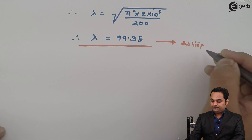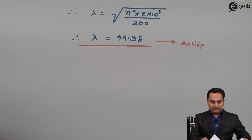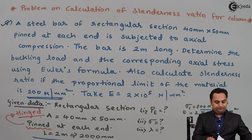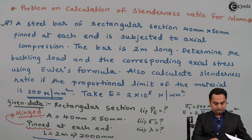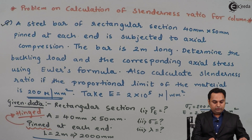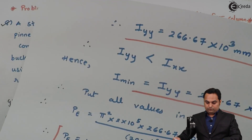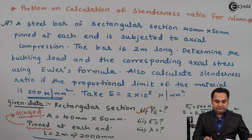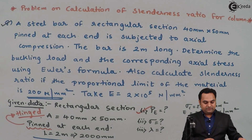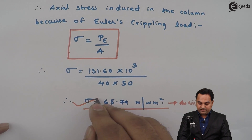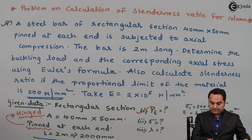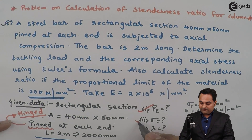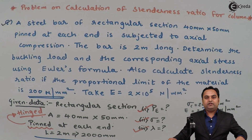This completes the problem. There were three things asked: first, Euler's load which was 131.60 kilonewton; second, the axial stress which was 65.79 Newton per mm²; and third, the slenderness ratio whose value is 99.35.